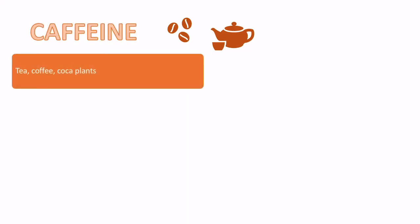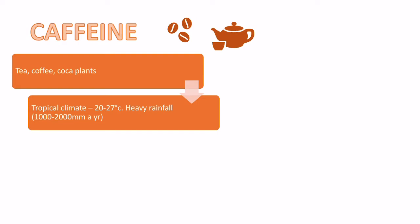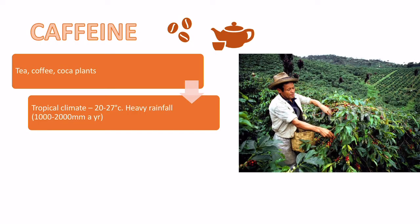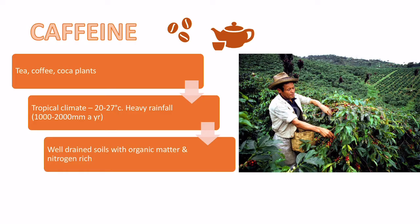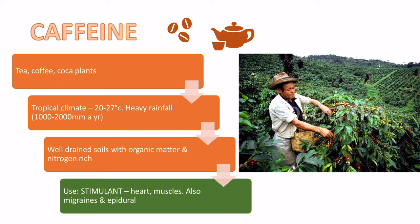The next is a more obvious drug — caffeine, which we find in tea, coffee and coca plants. This comes from a tropical climate where temperatures are above 20 degrees and there's lots of rainfall, as seen in this example of a farm in Colombia. It also needs well-drained soils; lots of fallen leaves provide organic matter and nitrogen, so very fertile soils are required. Caffeine is used as a stimulant when we drink tea, but also in drugs to treat migraines and in epidurals during childbirth.